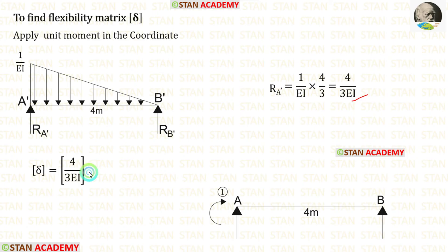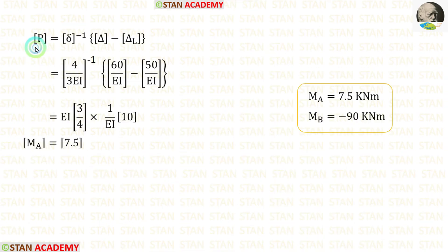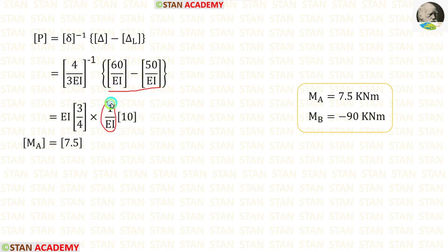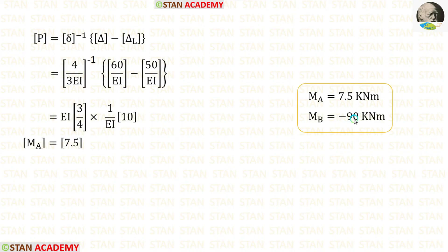Applying this value in the delta matrix, we now have all values. The inverse of 4/(3EI) is 3EI/4. Taking EI outside and adding the two matrices, then eliminating EI terms, we finally calculate MA.